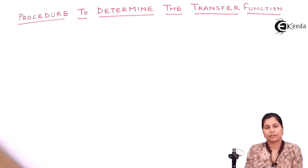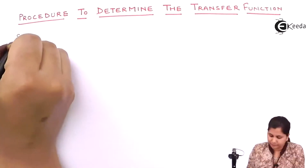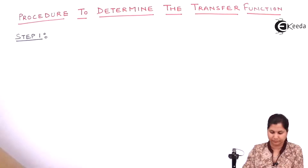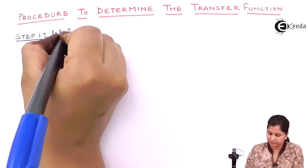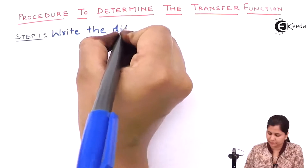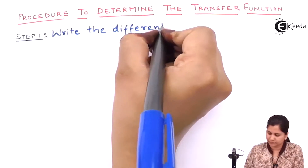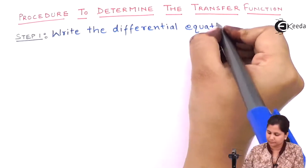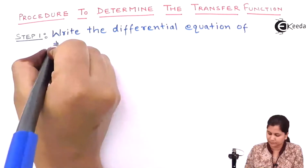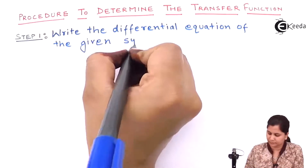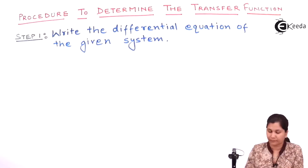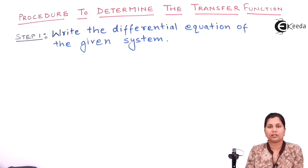The first step to determine the transfer function is to write the differential equation of the given system. First write its differential equation, then we will proceed to the second step.